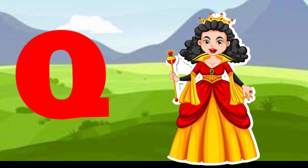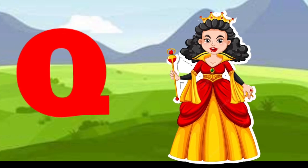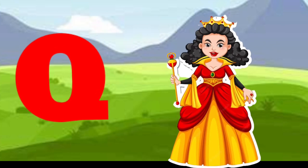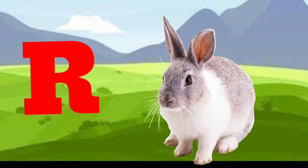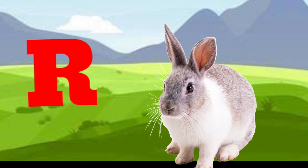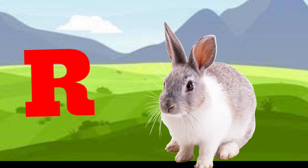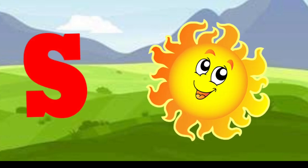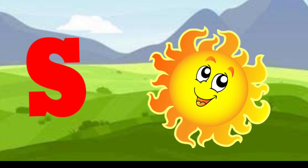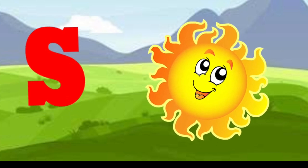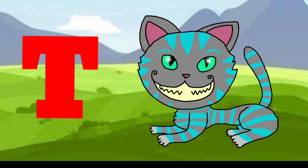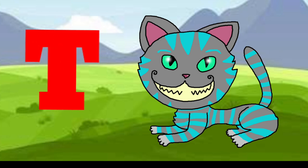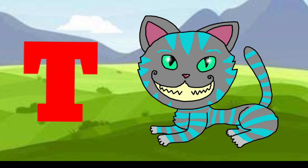Q is for queen, q-q-queen. R is for rabbit, r-r-rabbit. S is for sun, s-s-sun. T is for toad, t-t-toad.